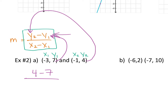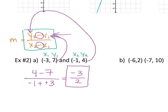Four minus seven. And X2 minus X1: negative one minus negative three. Negative one minus negative three — the formula is subtraction, so minus a negative three becomes plus a positive. Four minus seven is negative three; one plus three is two. So your slope is negative three over two.